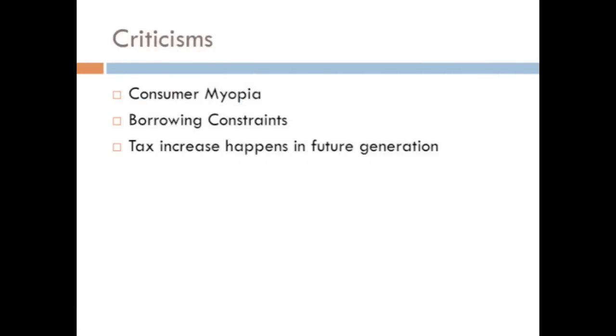Now we're going to move away from empirical evidence and into some criticisms of the theory of Ricardian equivalence, the first of which is consumer myopia. Ricardian equivalence assumes that consumers are rational and long-sighted, and it's easy to see that consumers may not always be this way. In fact, they may most of the time be short-sighted and irrational. Borrowing constraints is also a common criticism of Ricardian equivalence. Not everyone is able to borrow and save as freely as this model would need to be perfect. And our final criticism is that if the tax increase happens in a future generation, it's easy to be more myopic. And as we can see in the United States, the United States has been in debt for over a generation, so it's harder to expect that the tax increase is going to come anytime soon.